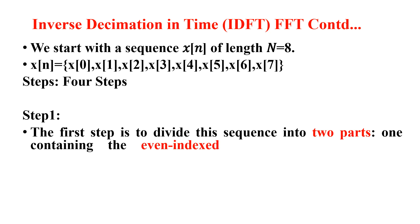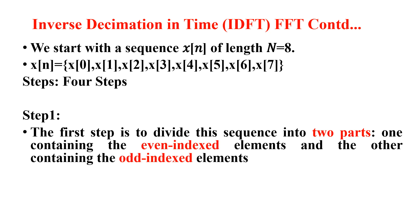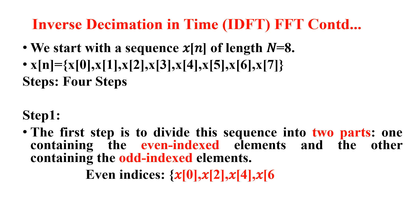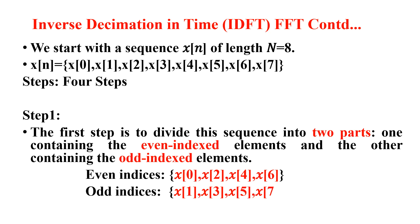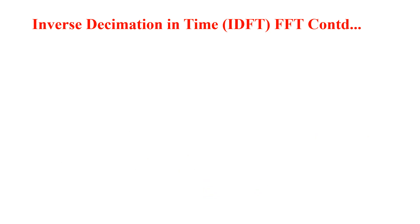Step 1: Divide the input sequence into two parts — one containing the even indexed elements and the other containing the odd indexed elements. The even indices are x(0), x(2), x(4), and x(6). Similarly, the odd indices are x(1), x(3), x(5), and x(7). This is step number 1.